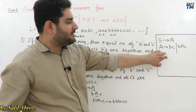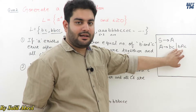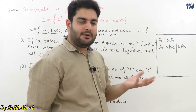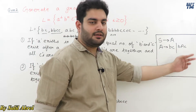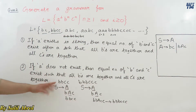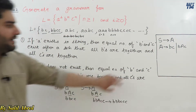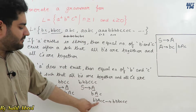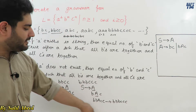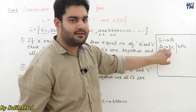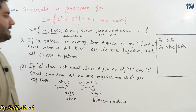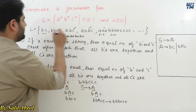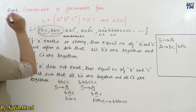So A → bAc can generate any number of b's and c's in equal quantity, and A → bc terminates the string by placing one final b and c. Both are terminal symbols. These production rules handle strings where no 'a' is present.